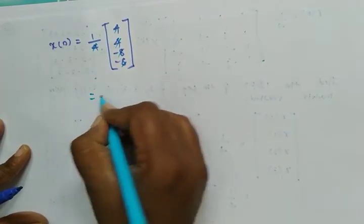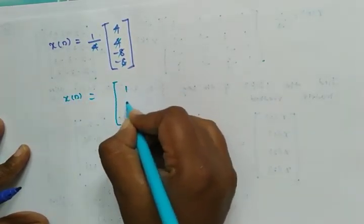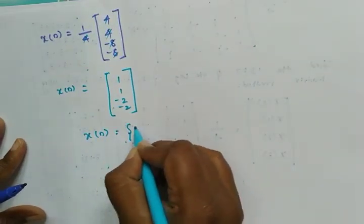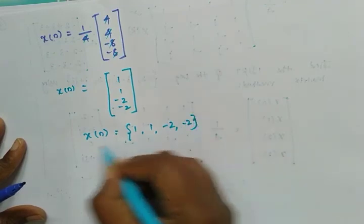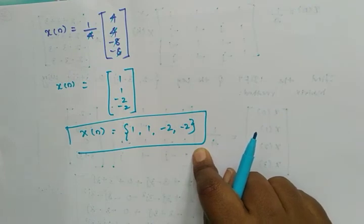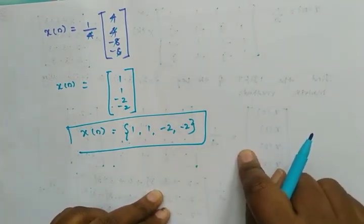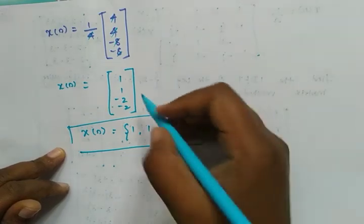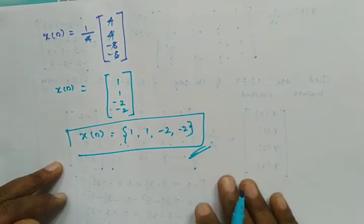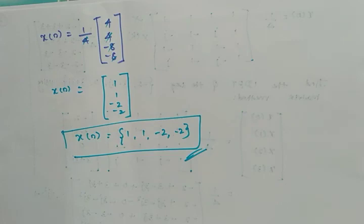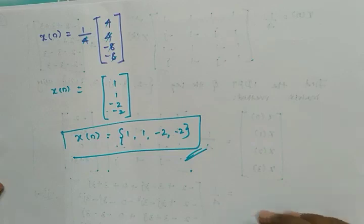Multiplying by 1/4, x(n) = [1, 1, −2, −2]. Therefore x(n) = {1, 1, −2, −2}, which is exactly the original sequence we used from the beginning for 4-point DFT. So we get the same answer. I hope you understand this. If you have any doubt, ask in the comment section. If you like this, share and support. Thank you, we'll meet soon in the next video.